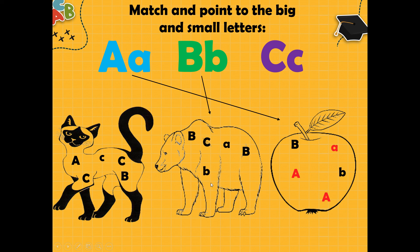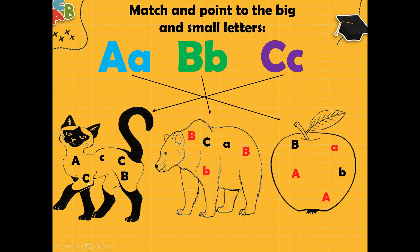Try to find big and small letter B here. Let's check. It is small b. What about this? Yes, it is big B. What about this? No, it is small a. This one? No, it is big C. And this? Yes, it is big B. And we have last letter C. Cat starts from letter C. Let's find here letter C. This one? Yes, it is big C. What about this? It is big B. This one? Yes, it is big C. Maybe this one? Yes, it is small letter c. And this? A. Okay.